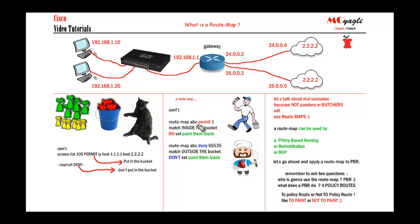Now let's talk about these two important statements: permit and deny. If you see a permit statement in a route map, just imagine there is a keyword 'do' in front of the set keyword — it basically means do whatever the set part says. And if you see a deny statement, just put 'don't' before the set keyword — it means don't do whatever the set part says.